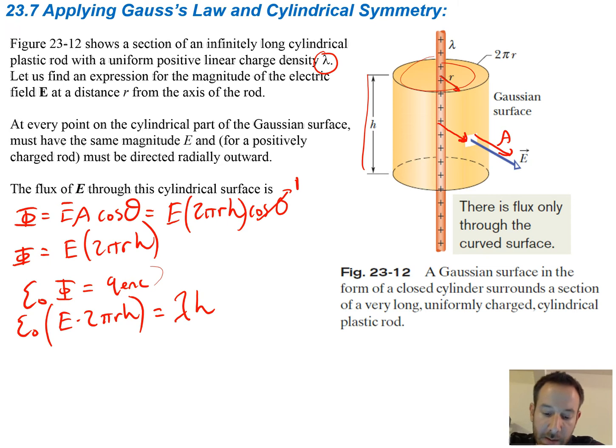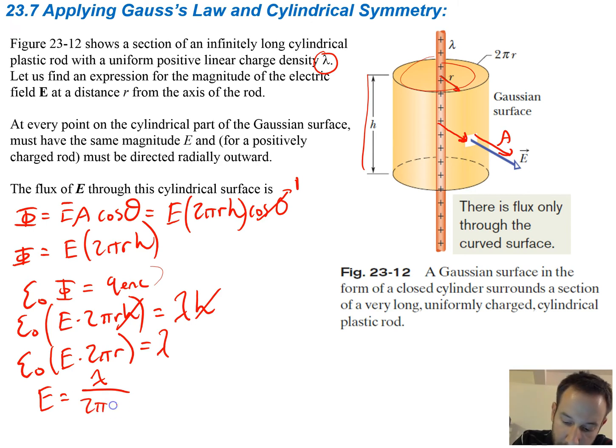Now if you look at this, we can see that the H is going to cancel, so the height actually doesn't matter. So what we're left with is epsilon naught times E times 2πR equals our linear charge density. And you can just rearrange this for E to find what the electric field is going to be. So that's just lambda divided by 2π epsilon naught times R. This is the electric field due to a line of charge.